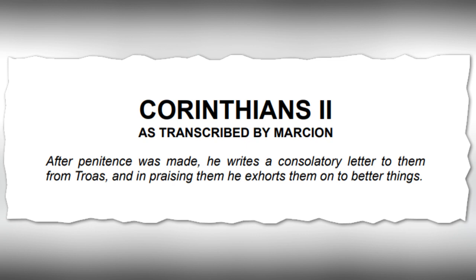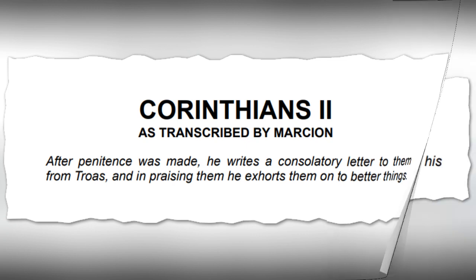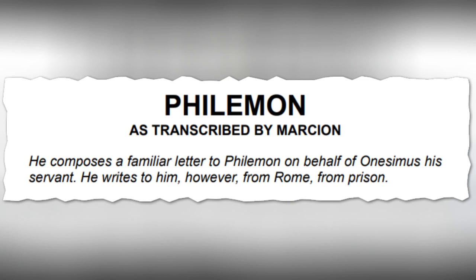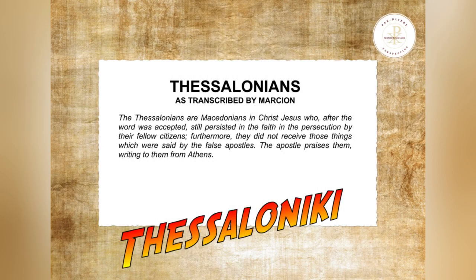Now Philemon — which is the shortest of the epistles — quote: 'He composes a familiar letter to Philemon on behalf of Onesimus, his servant. He writes to him, however, from Rome, from prison.' Unquote. Moving to Thessalonians — quote: 'The Thessalonians are Macedonians in Christ Jesus, who, after the word was accepted, still persisted in the faith and the persecution by their fellow citizens. Furthermore, they did not receive those things which were said by the false apostles. The apostle praises them, writing to them from Athens.' Unquote.